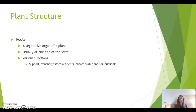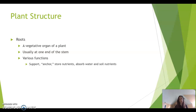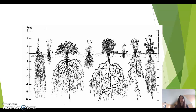Roots can be a storage organ for the plant, storing water and sugars. What they really need to do — the active part — is absorbing water from the soil and soil nutrients. Plants do not absorb water through their leaves or stem; they absorb water through the roots in the soil. There are also certain nutrients that plants can get through the soil, which we'll talk about in later presentations.